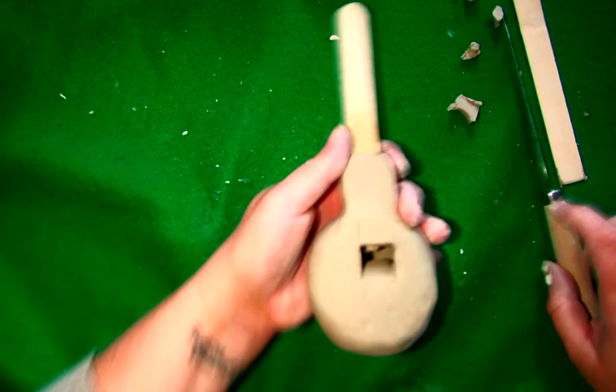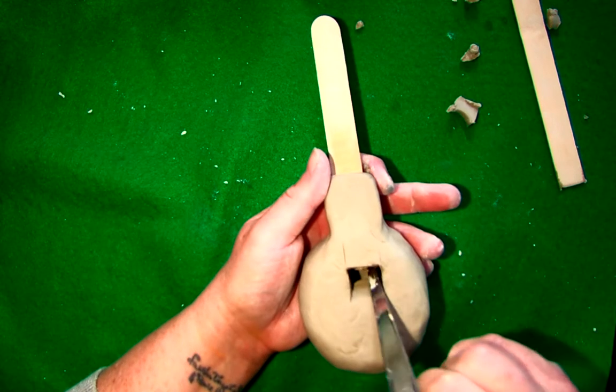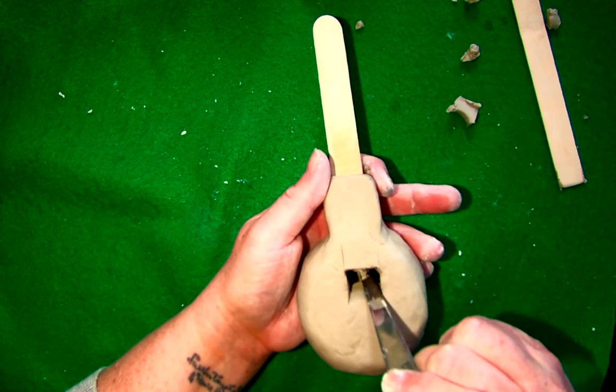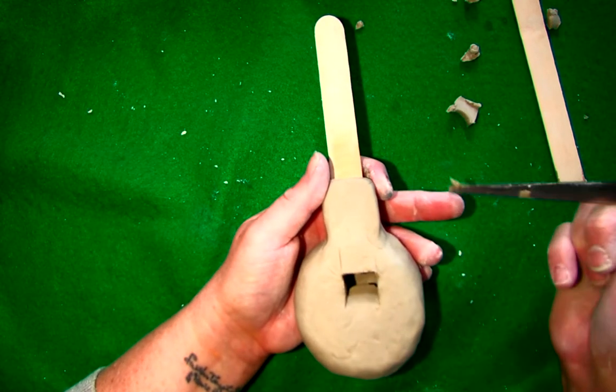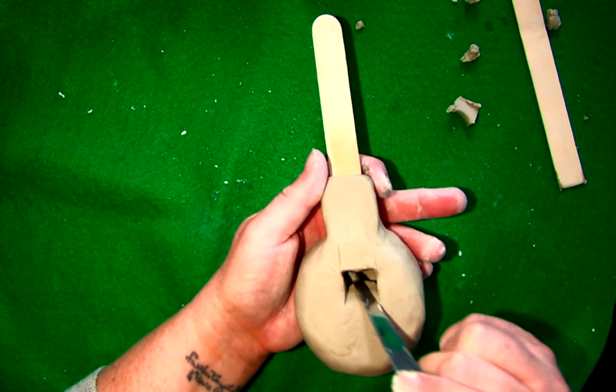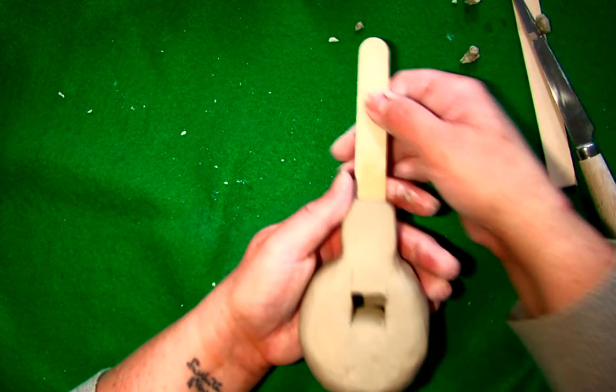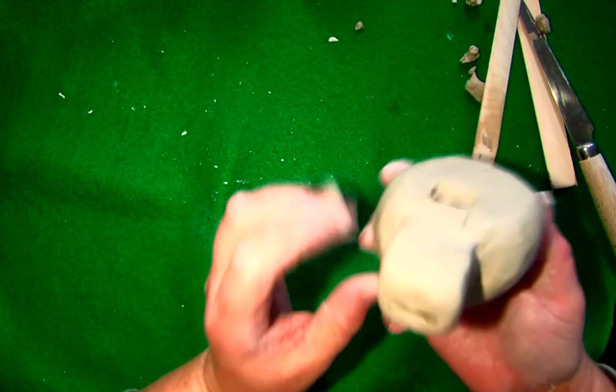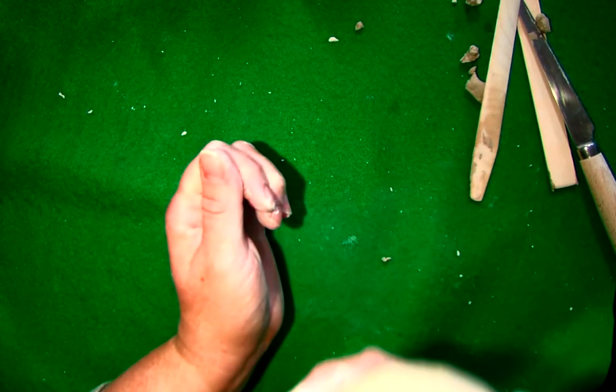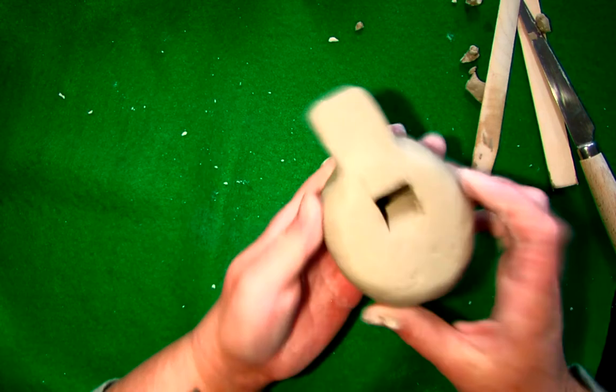And I see that I do have clay on my tongue depressor there, so I'm going to try to very carefully take some of that clay out to prevent it from going into the mouthpiece as much as possible. Now I'm willing to bet I have clay in the mouthpiece and when I blow on it no sound will come out. So there's no sound yet.